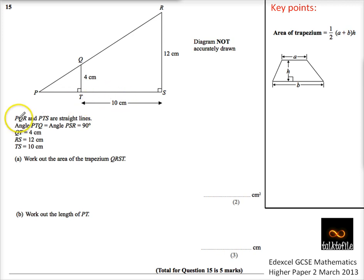It gives us all sorts of things. It says PQR and PTS from P to T to S, so straight lines, it's good to know, and angle PTQ is 90 degrees as is from P to S to R, so we know they're indicated on the diagram.